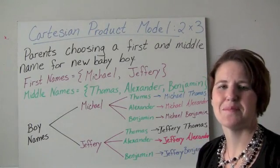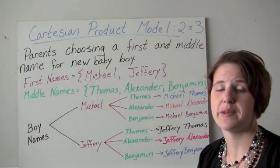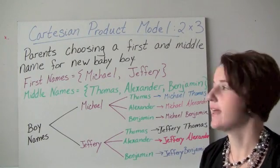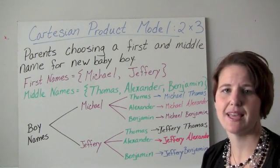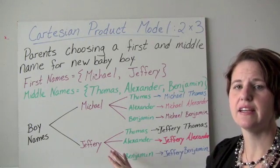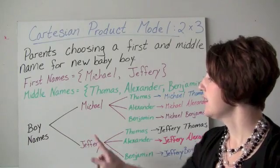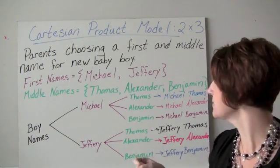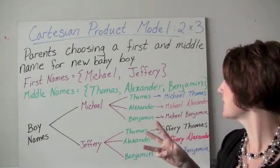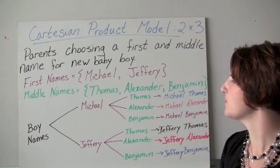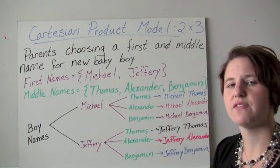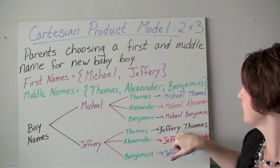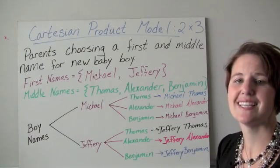Our third model for multiplication is the Cartesian product, which we saw when we talked about sets. Parents are choosing a first and middle name for a baby boy. First name choices are Michael and Jeffrey; middle name choices are Thomas, Alexander, and Benjamin. We draw a tree diagram: there are two branches for the first names, and then three branches off each for the middle names. The total branches are six: Michael Thomas, Michael Alexander, Michael Benjamin, Jeffrey Thomas, Jeffrey Alexander, and Jeffrey Benjamin.